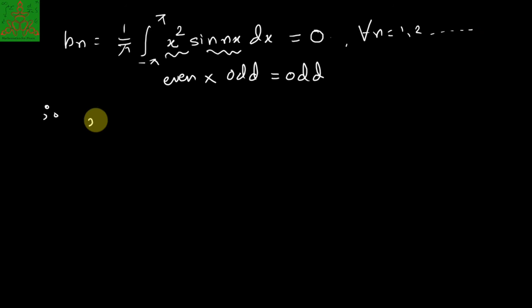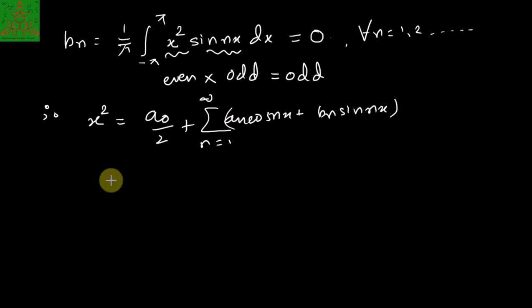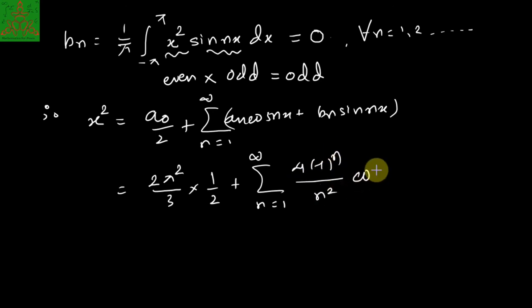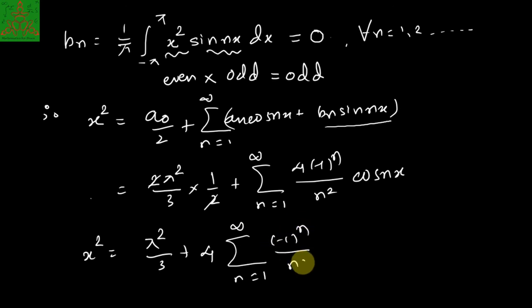So finally the Fourier series is x² = a₀/2 + summation from n = 1 to infinity of aₙ cos(nx) + bₙ sin(nx). Substituting the values: a₀ = 2π²/3, so a₀/2 = π²/3; aₙ = 4(-1)ⁿ/n²; and bₙ = 0, so that term vanishes. The Fourier series becomes: x² = π²/3 + 4 × summation from n = 1 to infinity of (-1)ⁿ/n² × cos(nx).